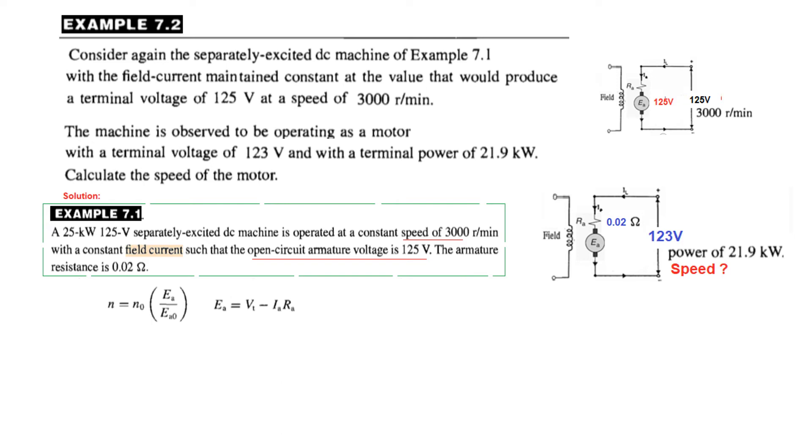So we know from the motor equation that Ea is terminal voltage minus the voltage drop across this, Ia Ra. Vt is 123 and to find this we need to find Ia first. So how much is Ia? Now this we can find from the power. So the input power is given 21.9 kilowatt. This is the input power. The terminal voltage is 123 volt, so we divide by that to find the current or the armature current. This is 178 ampere.